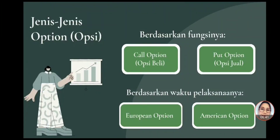Ada beberapa jenis opsi. Berdasar fungsinya, opsi ini terdiri dari dua macam. Yang pertama yaitu call option atau opsi beli, yang merupakan hak untuk membeli saham atau aset pada price yang disetujui (stock price) dan waktu yang telah ditentukan. Yang kedua put option atau opsi jual, merupakan hak untuk menjual saham atau aset pada price yang telah disetujui (stock price) dan waktu yang telah ditentukan. Kemudian berdasarkan waktu pelaksanaannya, opsi dibedakan menjadi European option atau opsi yang penggunaannya pada tanggal jatuh tempo, dan American option yaitu opsi yang penggunaannya sebelum tanggal jatuh tempo.